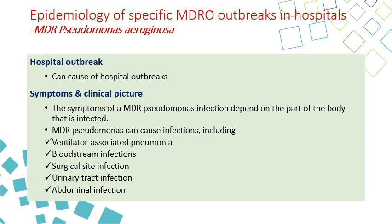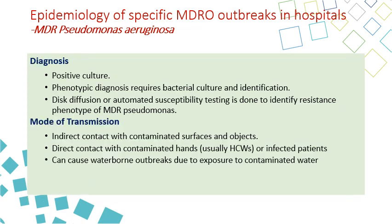MDR Pseudomonas aeruginosa can cause hospital outbreaks, and the symptoms will depend on the body part affected. The most common infections include pneumonia, ventilator-associated pneumonia, bloodstream infection, surgical site infection, urinary tract infection, and abdominal infection. Diagnosis is by positive culture, phenotypic diagnosis, and disc diffusion or automated susceptibility testing for resistance.